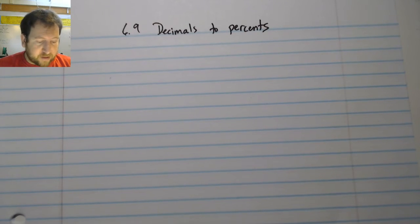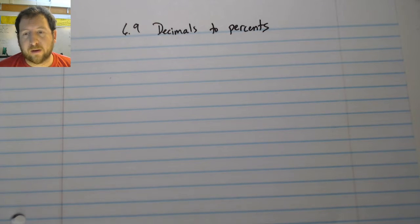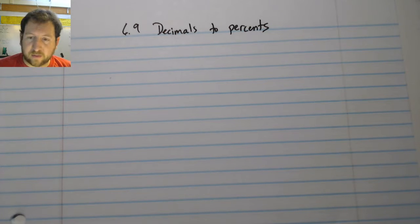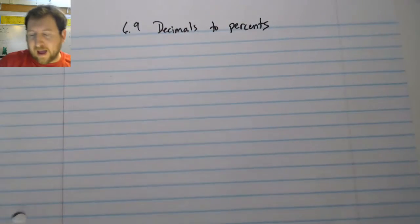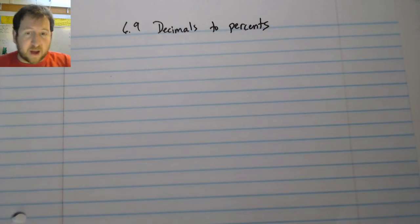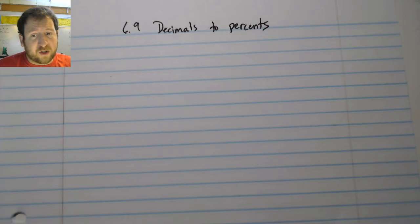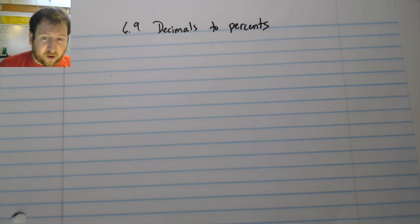Alright, today we're going to talk about 6.9 decimals to percents. And really all we're going to do here is go kind of backwards from what we did in the last section. Instead of going from percents to decimals, you're going to be given a decimal and you just have to write the percent. And this one is not very complicated, so I'm going to jump to our examples pretty quick.